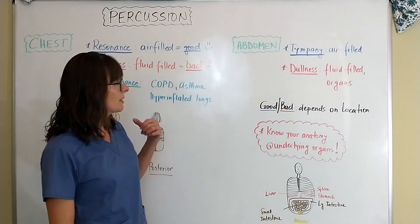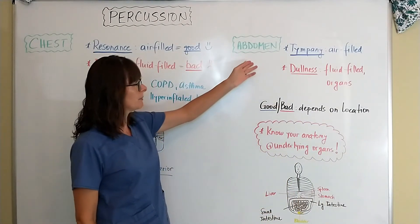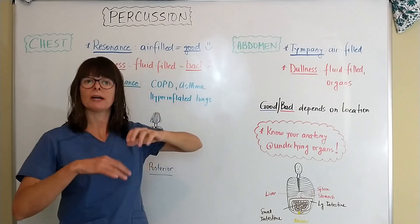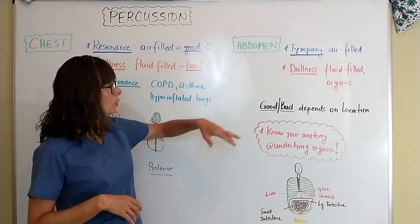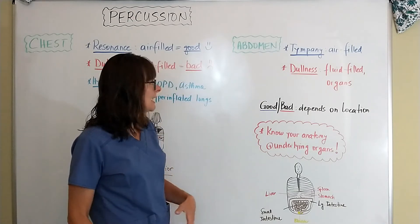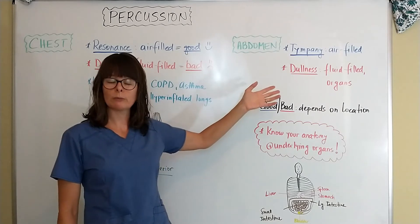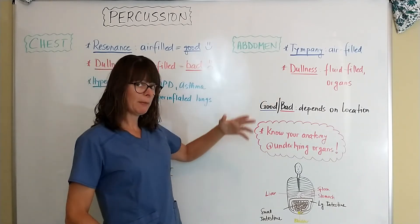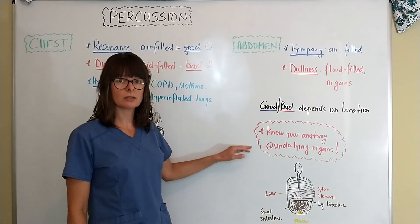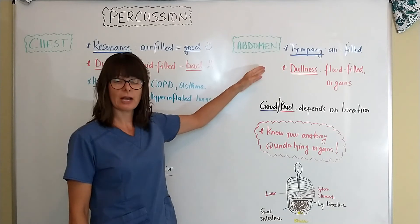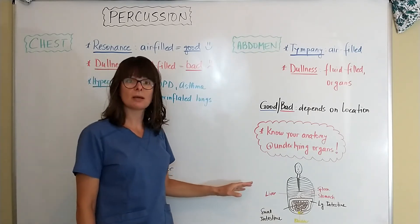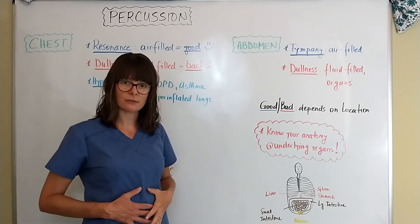For the abdomen it's very similar, but the terminology is different. The air-filled space in the abdomen is called tympani — think of a drum or your tympanic membrane. Dullness again indicates fluid-filled areas, but in the abdomen we also have underlying organs. Unlike the chest where we simply want air and not fluid, in the abdomen there are many different organs. We need to know our anatomy to determine whether dullness in a given location is normal.